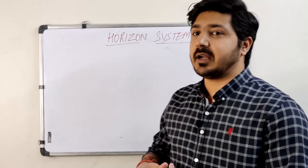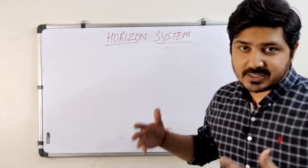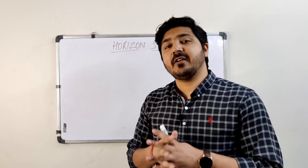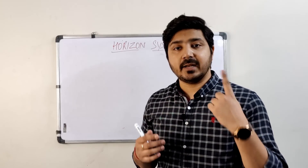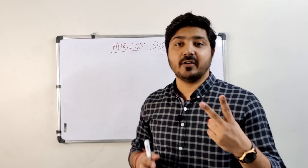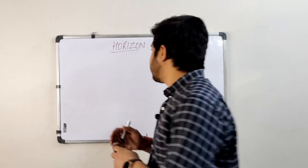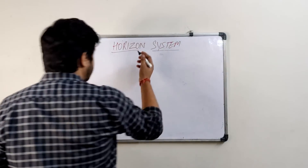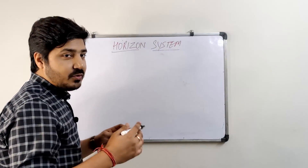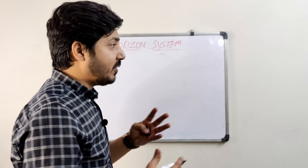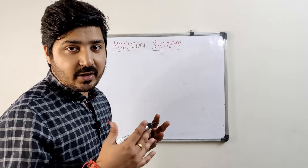In the first part we covered the ecliptic system, and in the second part we covered the equinoxial system. Now this is the third part — the horizon system — which we use quite often in problems related to the principle of navigation.